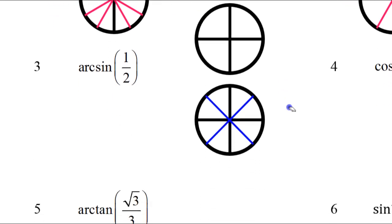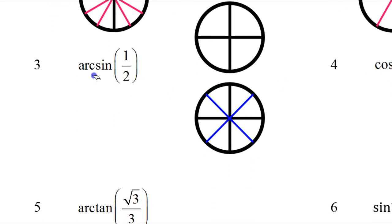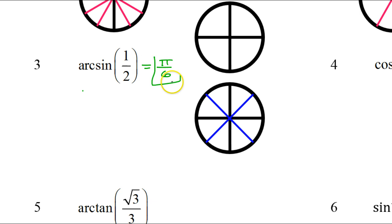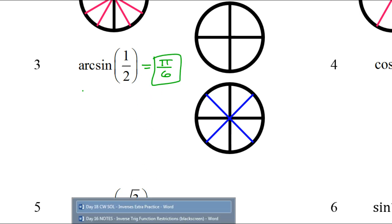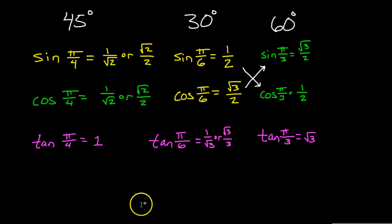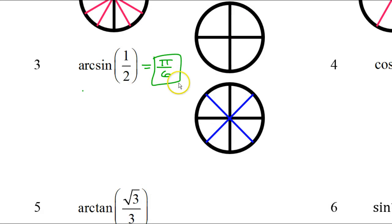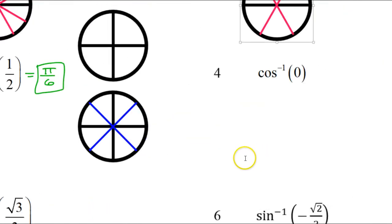Arc sine of 1 half is just an angle — it's the angle whose sine is 1 half. We have memorized that that is pi over 6. Plain and simple — we memorized that the sine of pi over 6 is 1 half. So that's the answer. That one's plain and simple.